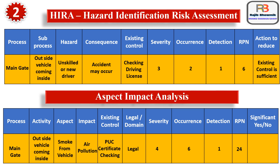All company processes and activities are to be analyzed by HIRA and aspect impact analysis. These two are the first and main activities for a safety professional. HIRA is mainly for human safety, and aspect impact analysis is mainly for the environment.